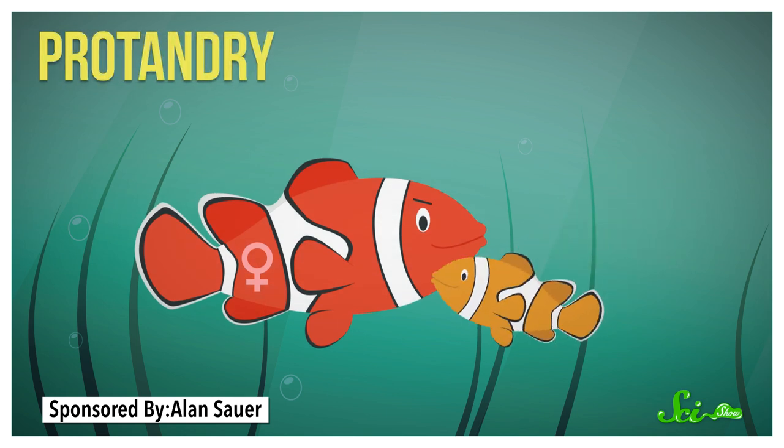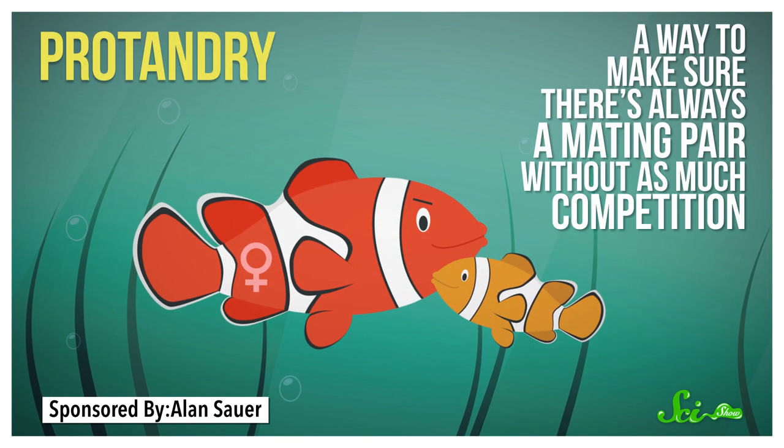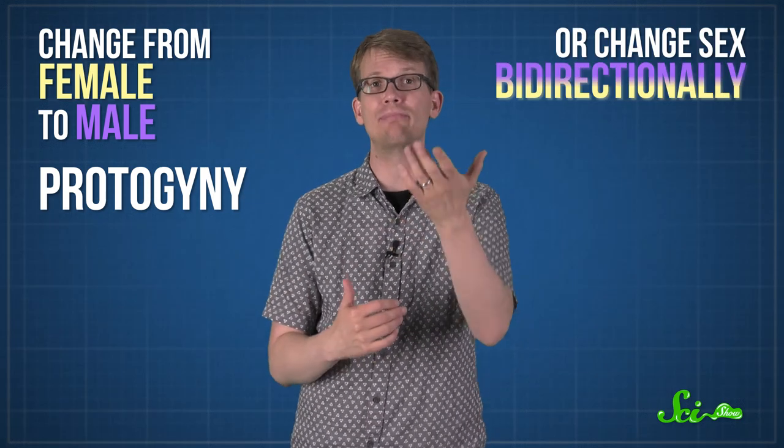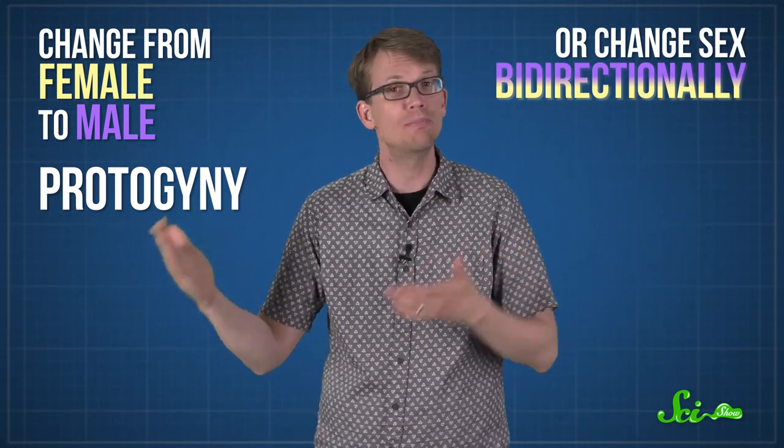This male-to-female change is called protandry, and it's basically a way to make sure there's always a mating pair without as much competition. Knowing this makes Finding Nemo seem a little inaccurate, because his dad would have actually become his new mom. Other species of fish can change from female to male, called protogeny, or change sex bi-directionally, depending on the pressure to breed.